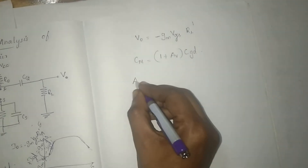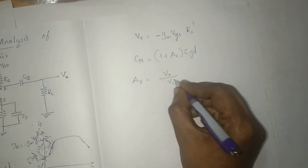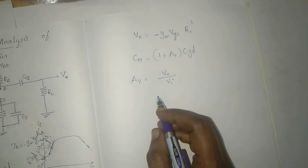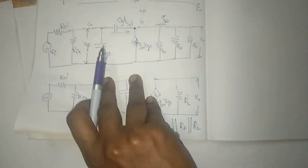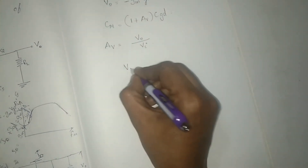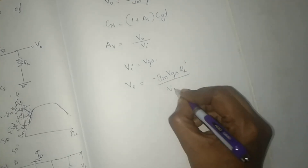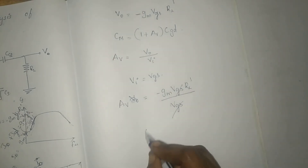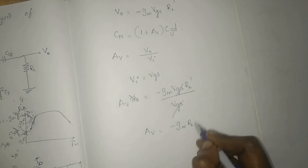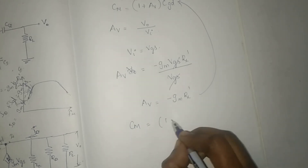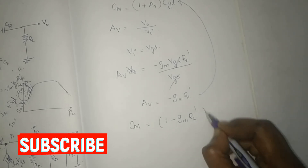Now we calculate the voltage gain. The voltage gain AV = V0 / Vi. Since Vi = Vgs, substituting V0 = −Gm · Vgs · RL' gives AV = −Gm · RL'. Substituting this into the Miller capacitance formula, the Miller capacitance becomes CM = (1 − Gm · RL') · CGD.